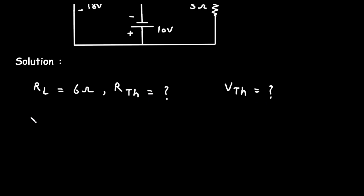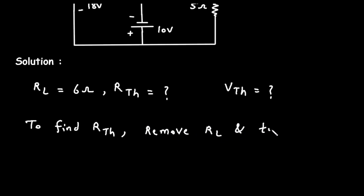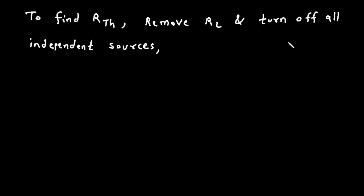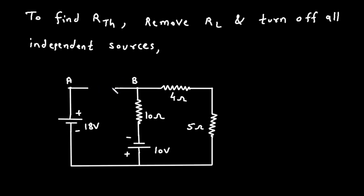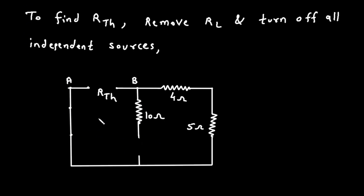First, let's find the value of RTH. To find RTH, we will remove RL and turn off all independent sources. When we turn off the voltage sources, they will be replaced by short circuit, because independent voltage sources are replaced by short circuit and independent current sources are replaced by open circuit.